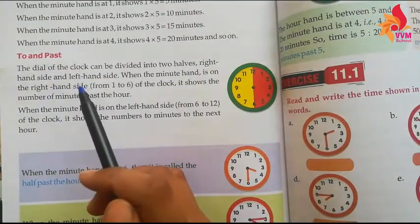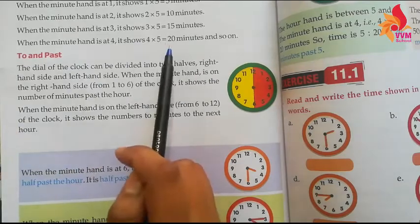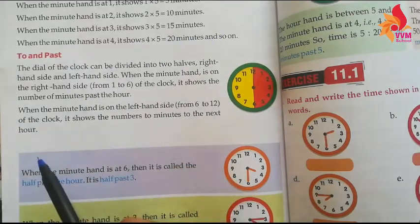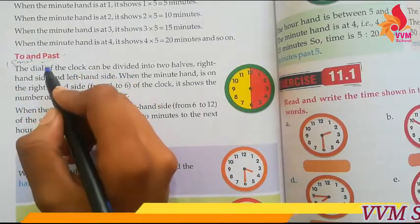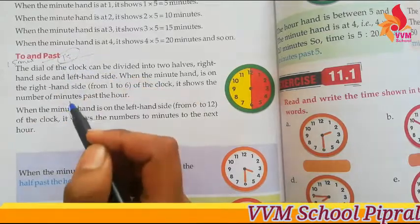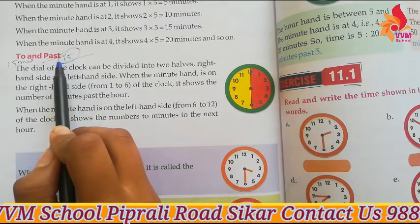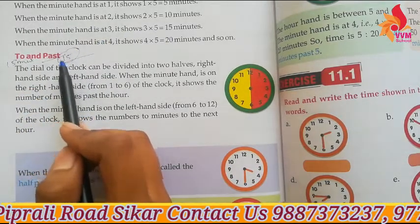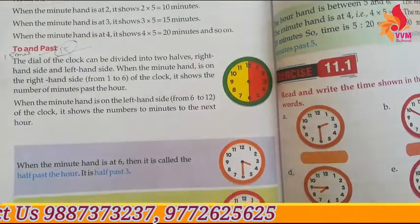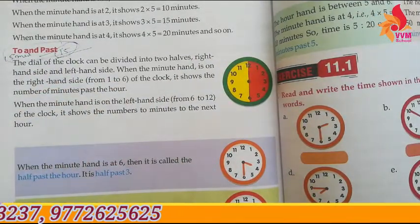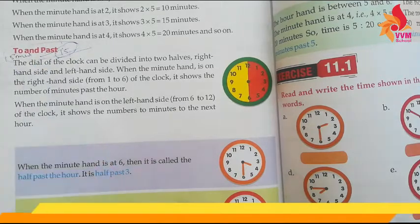Quarter to means 15 minutes are remaining before the hour. Quarter past means 15 minutes have passed after the hour — for example, quarter past six means six baj ke 15 minutes have passed. Half past means half an hour has passed. So this was all about this class. If any student is having any problem you can ask. Bye.